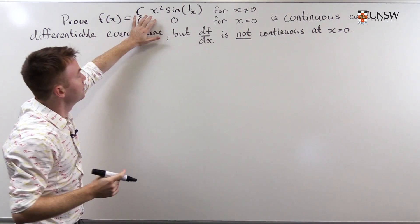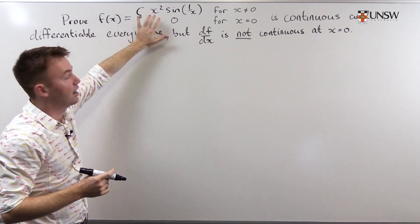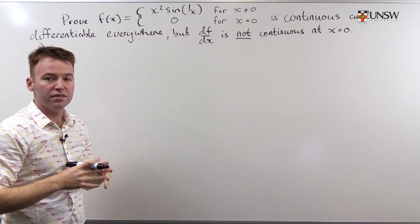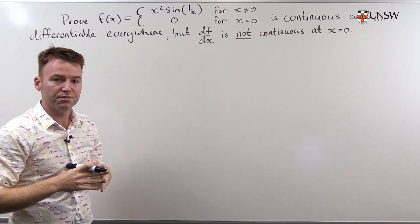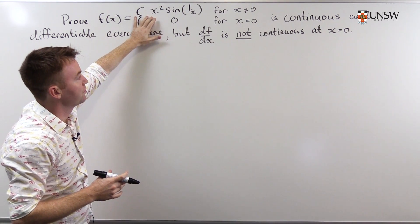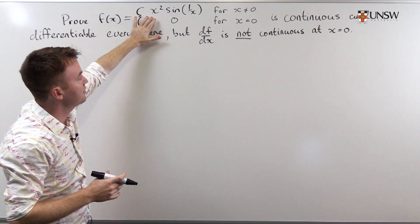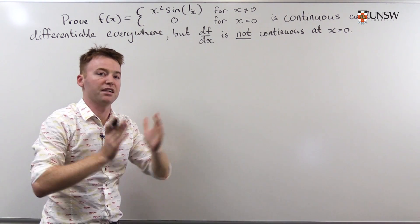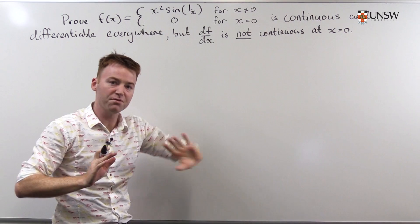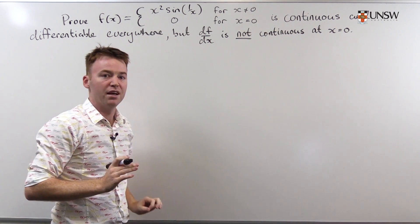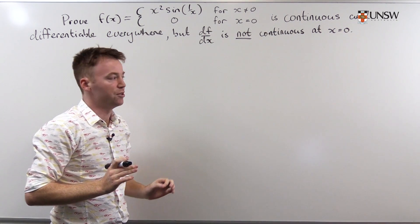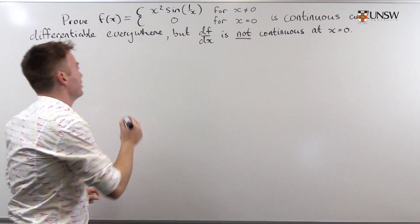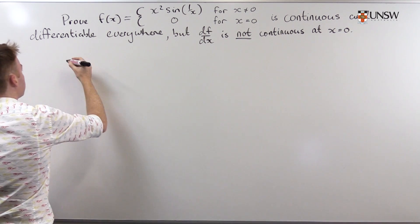First of all, the functions x squared and sine of 1 over x are differentiable. x squared is differentiable for all x, and sine of 1 over x is differentiable for all x except at x equals 0. So for most points we get differentiability for free by virtue of the differentiability of those two functions for almost every point x.